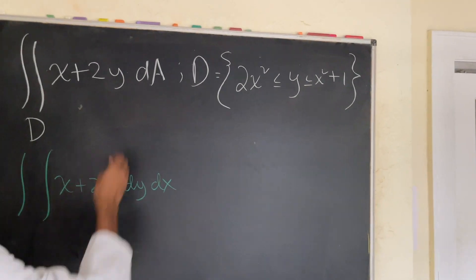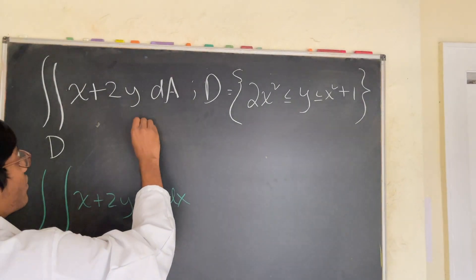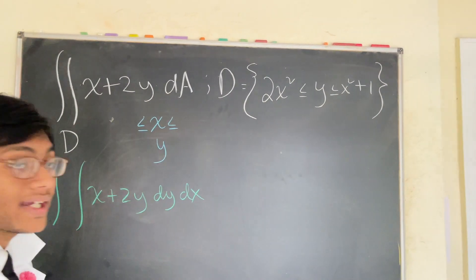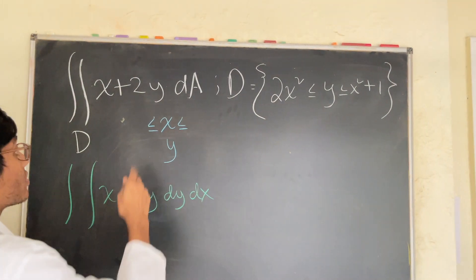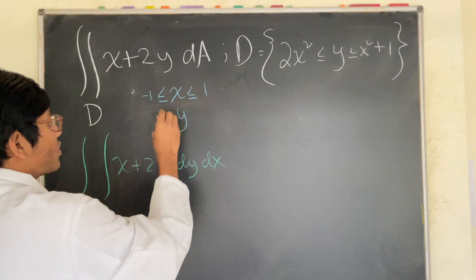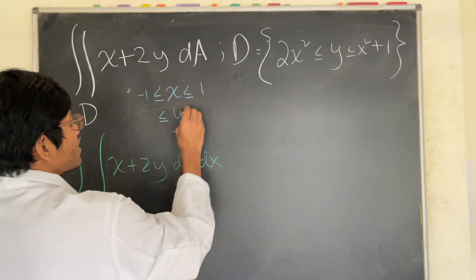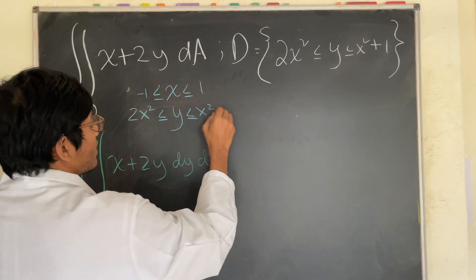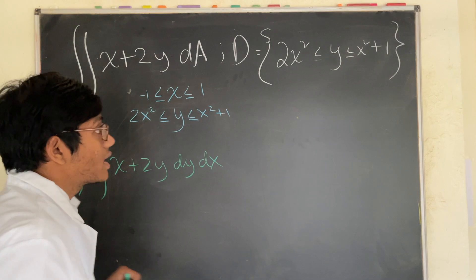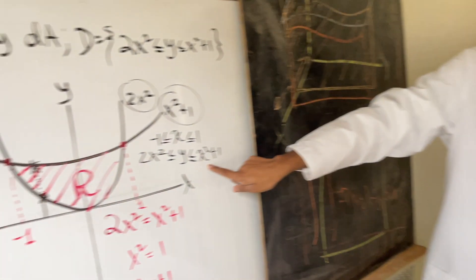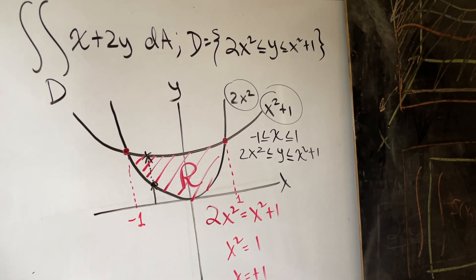Let me pick a blue marker. For x, the limits of integration are between negative 1 and 1, and for y the limits of integration are between 2x squared and x squared plus 1. Let me check the whiteboard — yes, those are our limits of integration, as you can see right here.